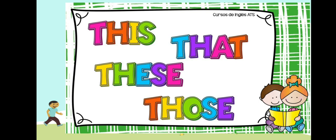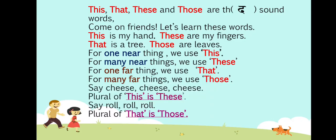Let's go through the rhyme again. This, that, these and those are the sound words. Come on friends, let's learn these words. As you are already familiar with the sound, so you can correlate these words with the sound. Today we will learn about these four words. The next line is: this is my hand, these are my fingers. Here we are talking about one hand, and our hand is always near to us, so we have used the word 'this' for referring the thing which is near to us.